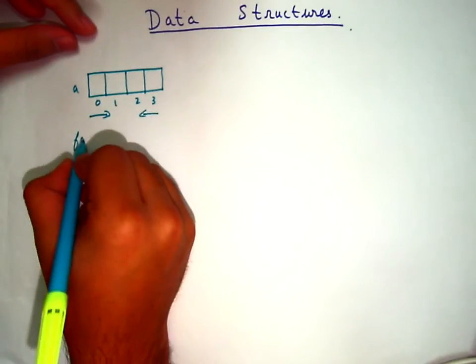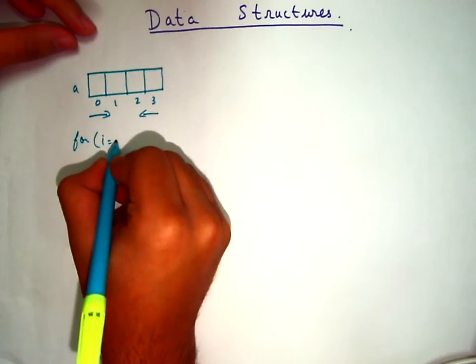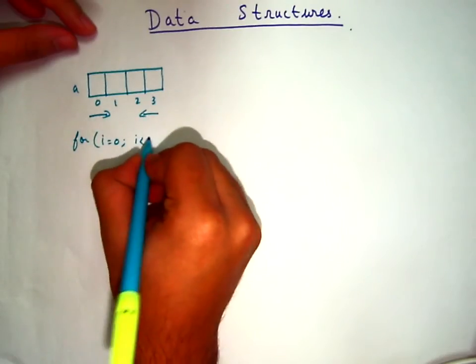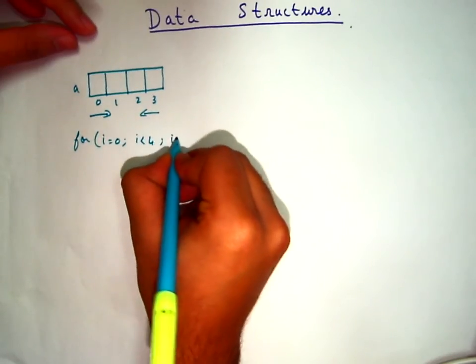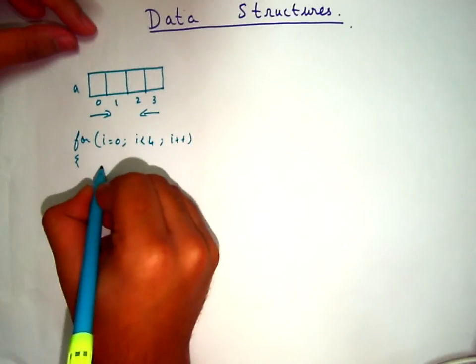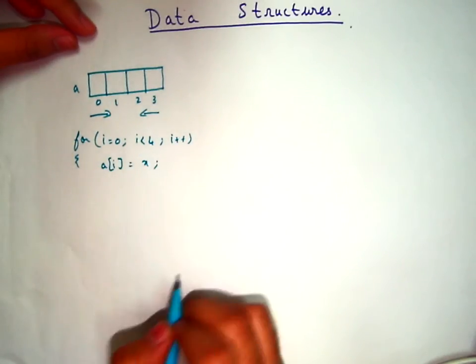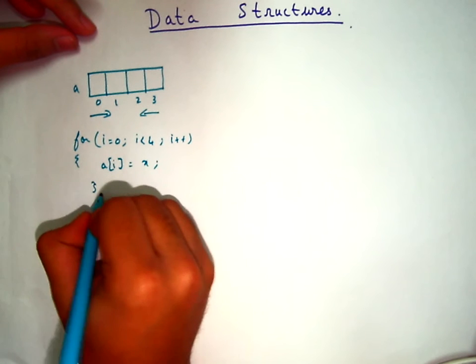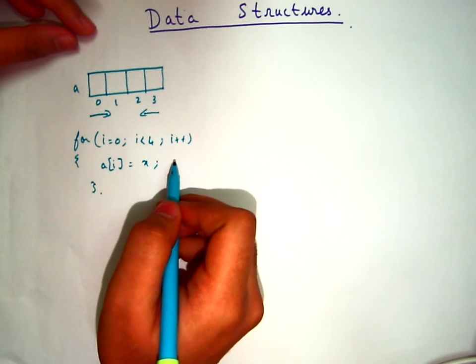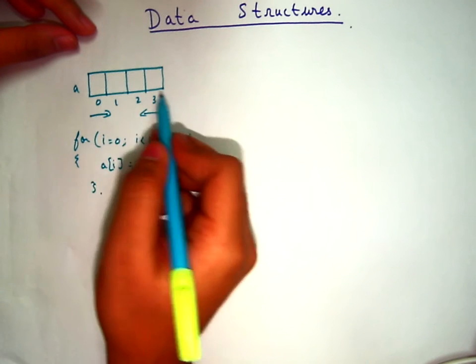Let's write the code for that: for i equals 0, i less than 4, i plus plus, a of i equals some integer variable. What this code will do is it will fill the spaces in the array in this direction.